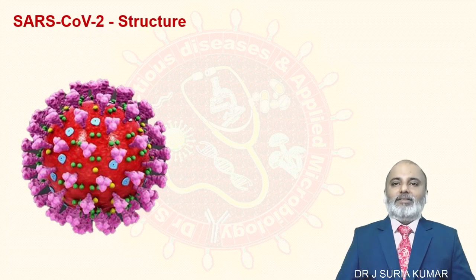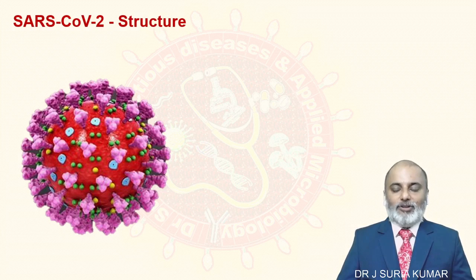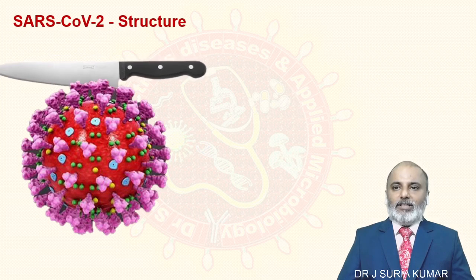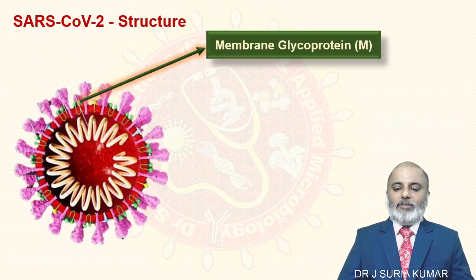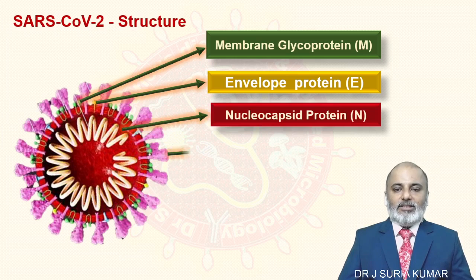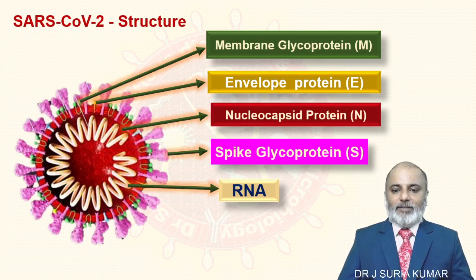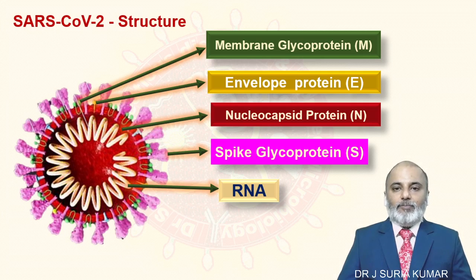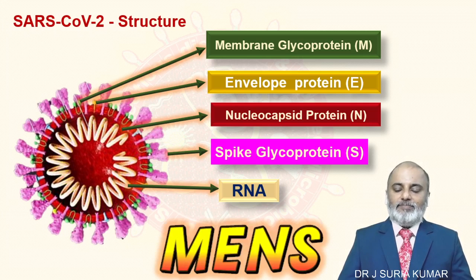This is the basic SARS-CoV-2 structure that everybody has been aware of for the past seven months. It has four important proteins: membrane protein, envelope protein, nucleocapsid, and spike protein. Apart from that, the RNA — each one is coded by one gene. For example, membrane protein M gene, spike protein S gene, envelope protein E gene. We call it as MENSE: membrane, envelope, nucleocapsid, and spike.